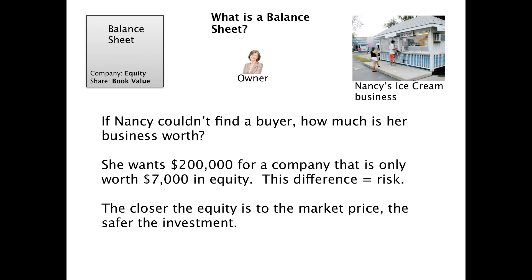This difference between the market price and the actual equity sitting in the company — that difference is the risk. That's the margin of safety. This was Benjamin Graham's big thing — Warren Buffett's professor at Columbia. If a business didn't have a substantial margin of safety between the market price and the equity, he was very hesitant to buy. In this scenario, the equity is only 3.5% of the market price — that's no safety at all. If you bought this business for $200,000 and sales started decreasing, you'd have to sell it — and it's only worth its equity. The closer the equity is to the market price, the safer the investment.